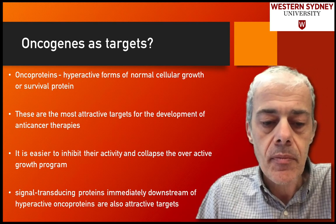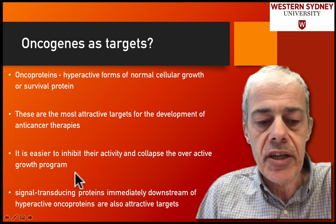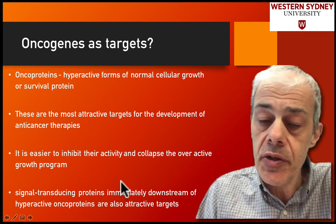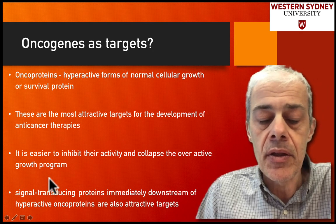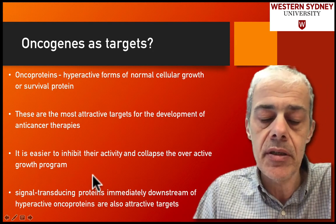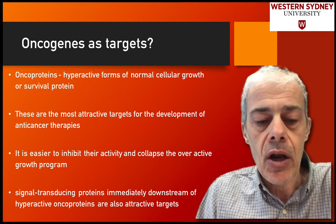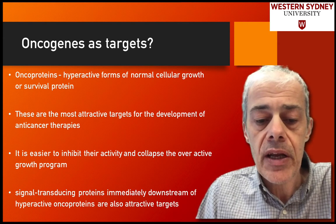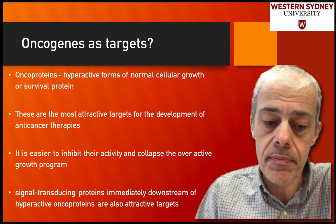A lot of these oncogenes are involved in signal transducing pathways — the signaling pathways we discussed in previous lectures. So a lot of these proteins make fairly good targets for rational drug design.